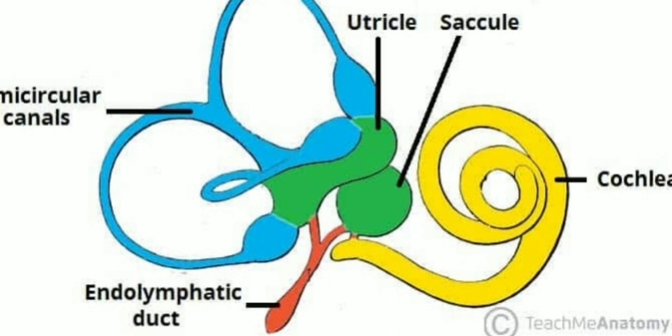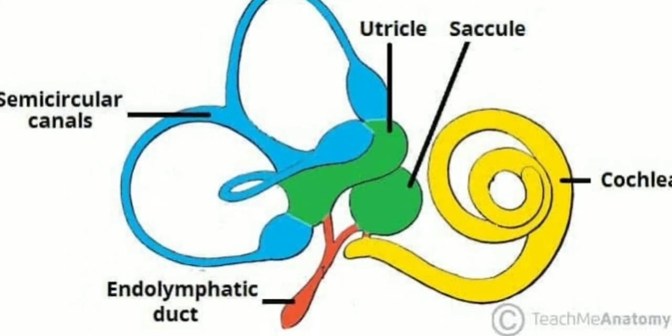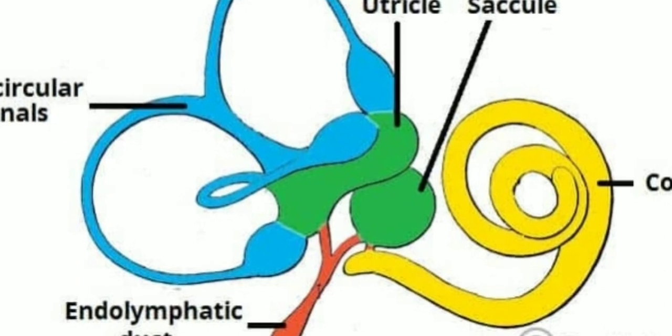The macula is the receptor for static balance. Within the cochlea, we have the organ of Corti, which is the receptor for hearing. Within the semicircular canals, we have the semicircular ducts — superior, posterior, and lateral — arising from the utricle and saccule.